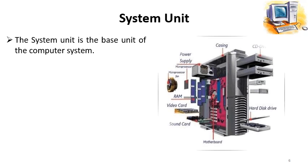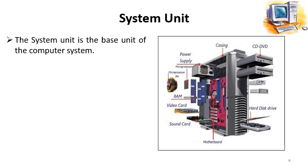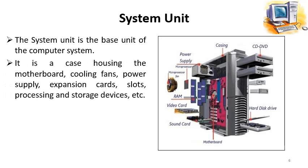The system unit is the base unit of the computer system. It is a case housing the motherboard, cooling fans, power supply, expansion cards and slots, processing and storage devices, etc. This box — called the system unit or case — houses and encloses all these components inside it along with the motherboard. Components such as CD/DVD-ROM, hard disk, video card, sound cards, RAM, power supply, cooling fan, and processor are all enclosed inside the system unit.